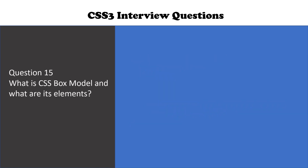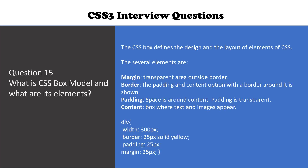The next question is: what is the CSS box model and what are its elements? The CSS box model defines the design and layout of elements in CSS. The several elements are: margin, border, padding, and content. This is an example where we have a div and the width, border, padding, and margin of that div are specified.